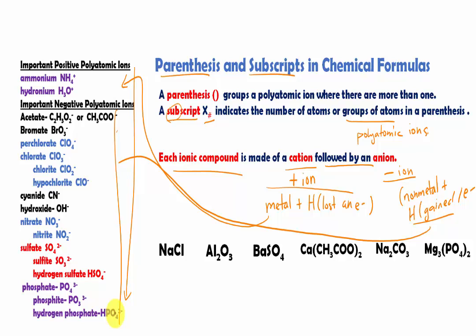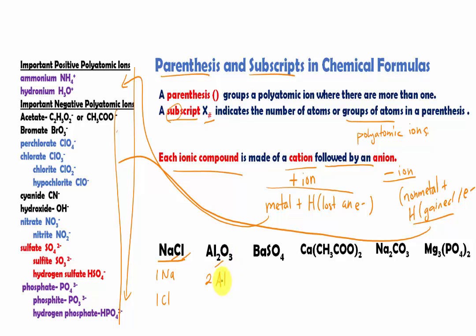Let's look at some examples of how parentheses and subscripts are used in chemical formulas. First, sodium chloride — it doesn't have a parenthesis or subscript, so we assume it is one Na and one Cl. Next, Al₂O₃: the subscript 2 tells you there are two Al atoms, and the subscript 3 tells you there are three O atoms.